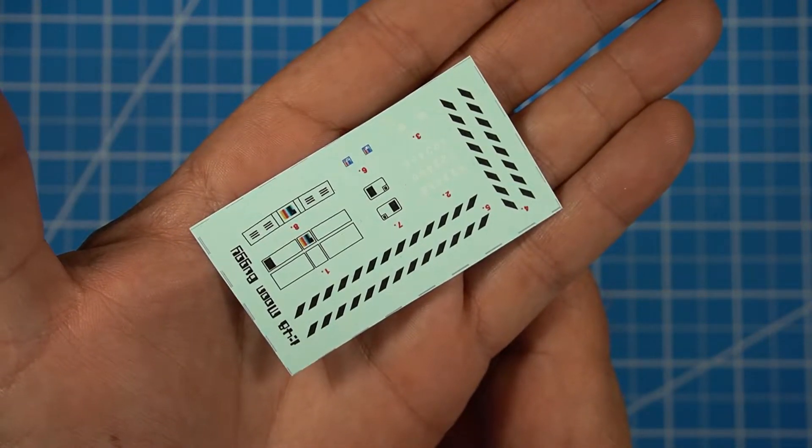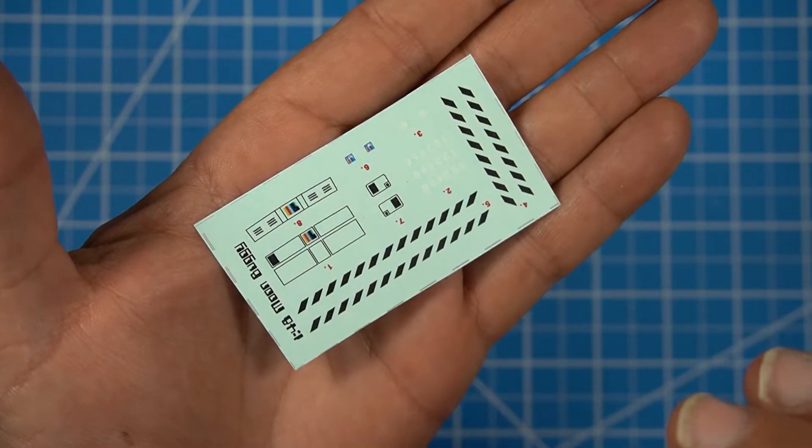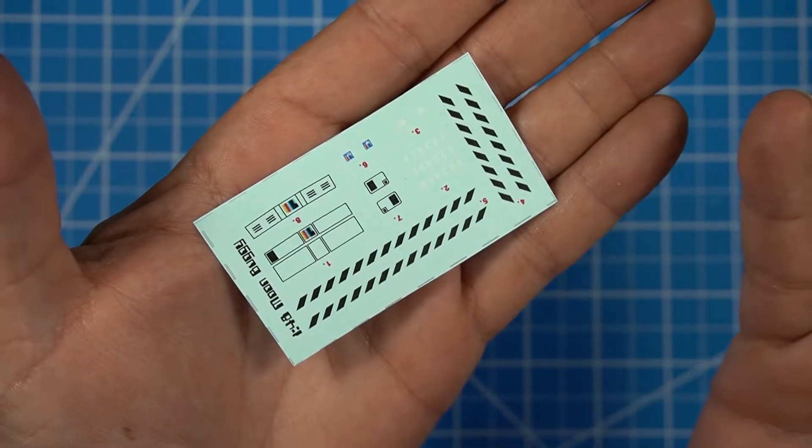This is the first decal sheet. This is for the moon buggy. It has the striping down the sides, the dashboard, other instrument panels, and also numbering for the buggy itself, whichever one you want to number it.